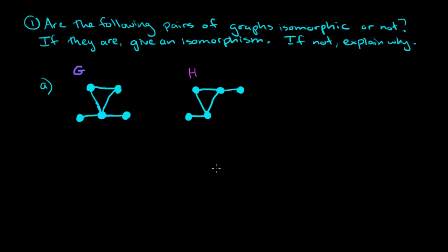What I want to do is take a look at some examples of pairs of graphs and determine if they are isomorphic or not. If they are isomorphic, we should give an isomorphism, and if not, we need to explain why they're not isomorphic.